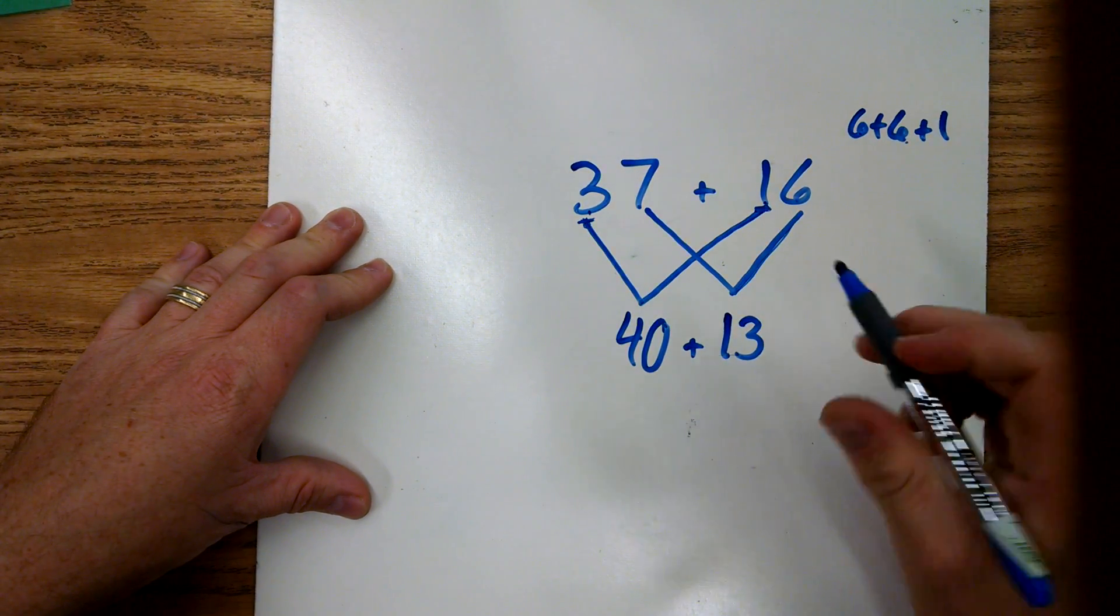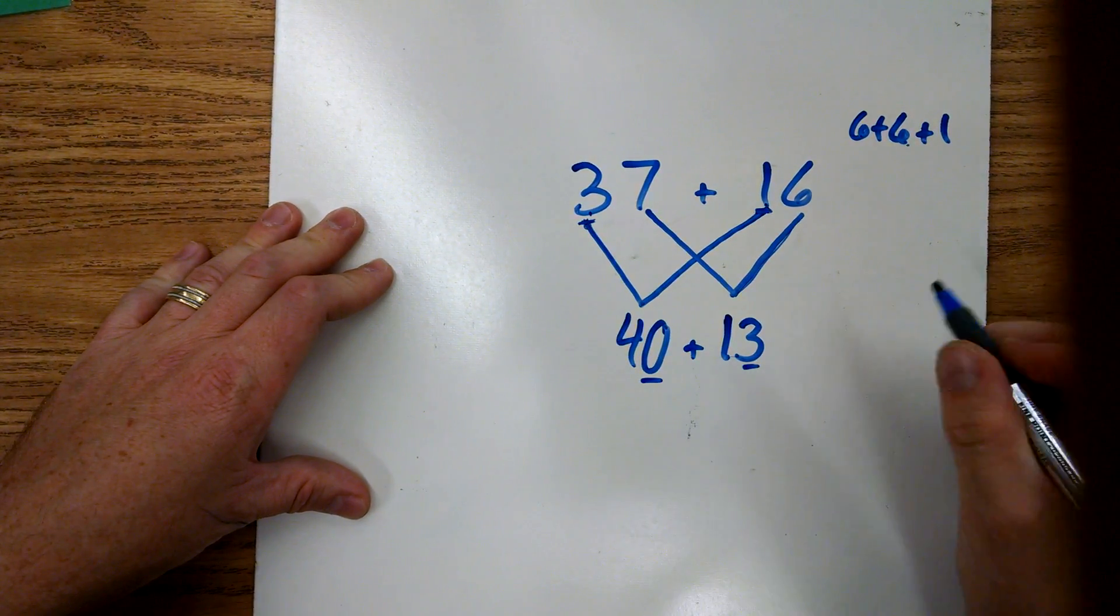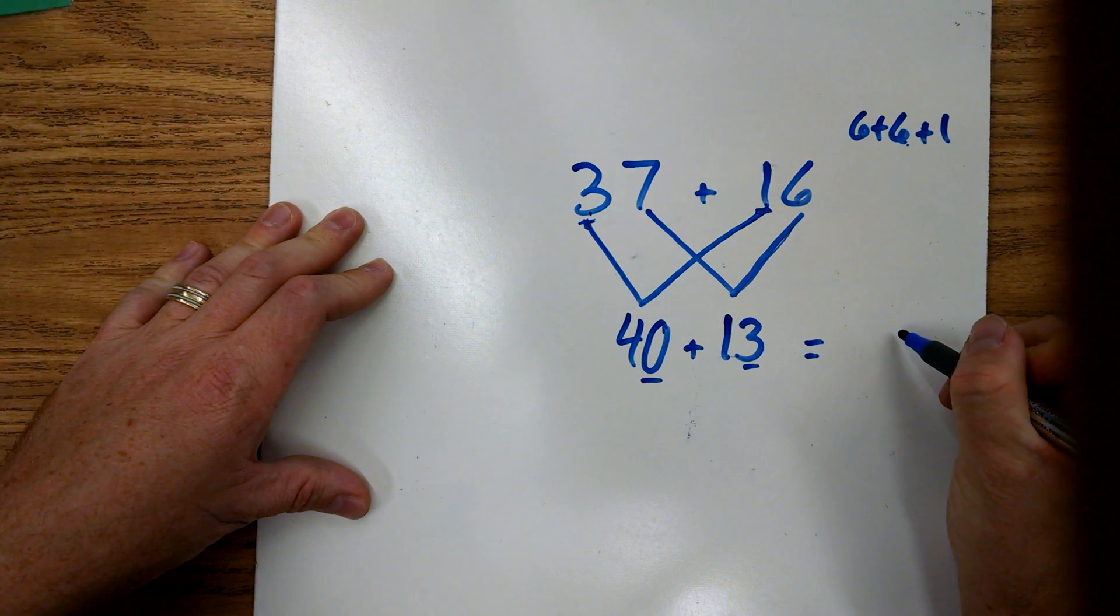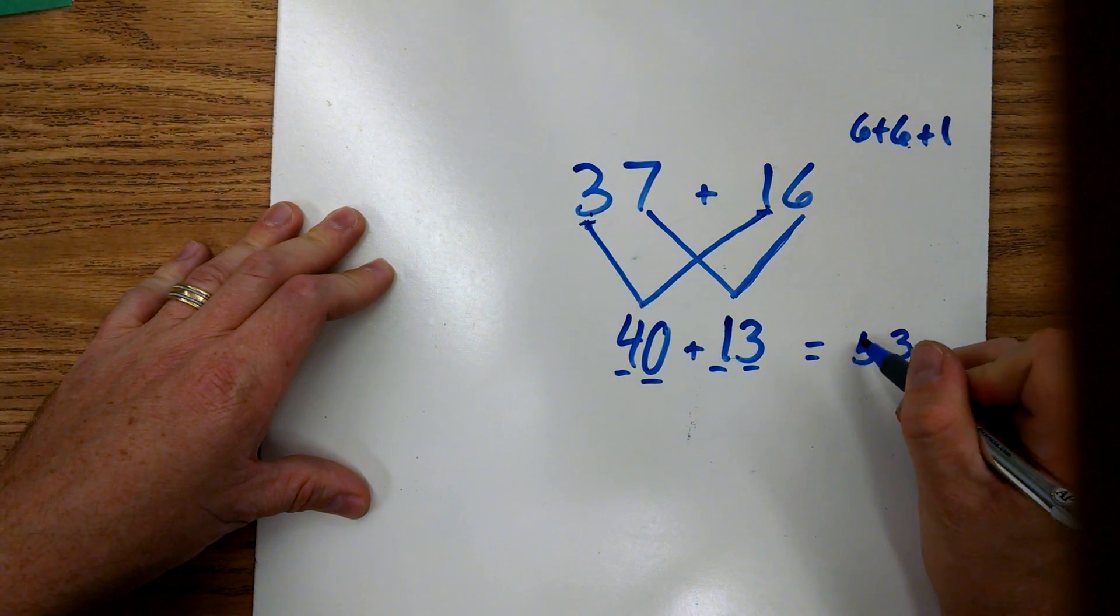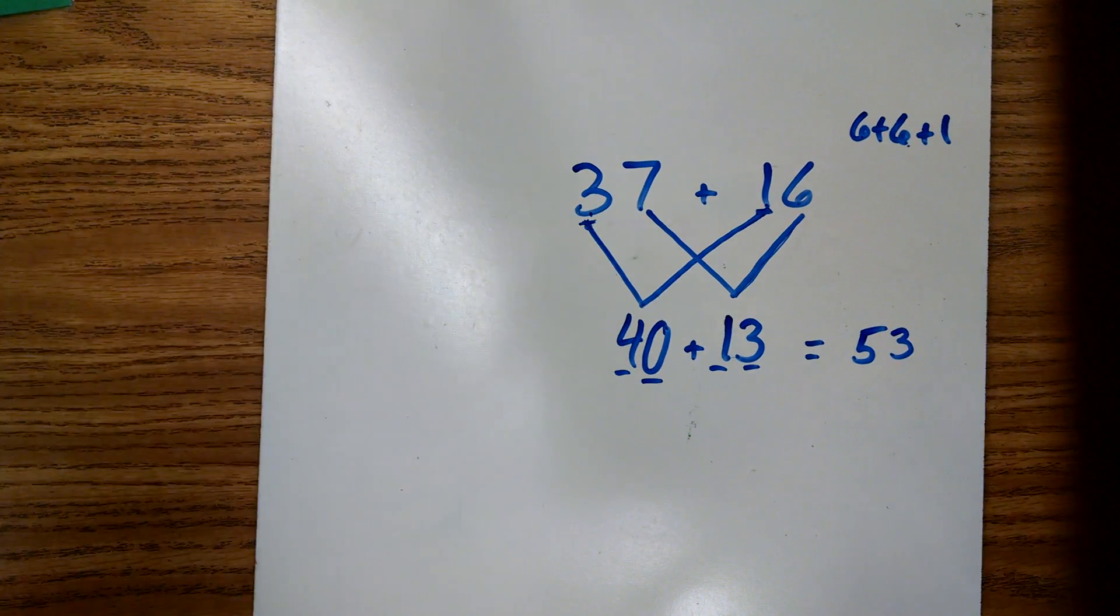The next thing you have to do is just add them back together. So when you look at your zero and your three ones you'll get three, you look at your four tens and your one ten gives you five tens.